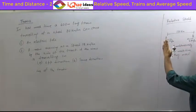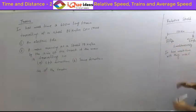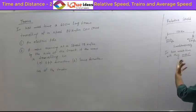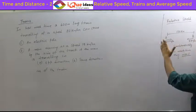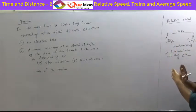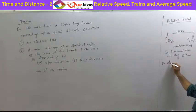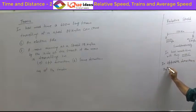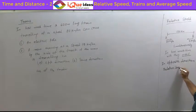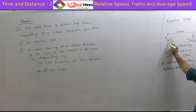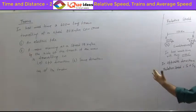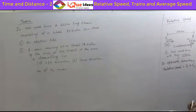Why did we add? Because both of them are walking together to reduce the distance. What is the meaning of meeting? The meaning of meeting is they reduce the net distance to zero. If the distance becomes zero, they will meet. Both of them are trying towards that target, so their efforts get added. So remember: in the opposite direction, relative speed is equal to S1 plus S2.